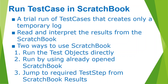There are two ways to use scratchbook: you can run test objects directly so that test cases run in scratchbook, or you can run using an already-opened scratchbook. Another advantage is that once results are published in scratchbook, you can jump from a result directly to the corresponding test step. For example, if a step failed, you can right-click on that failed result and jump to the corresponding test step to fix your code and rerun.